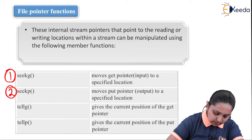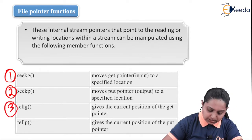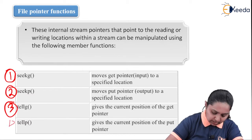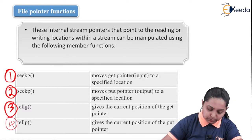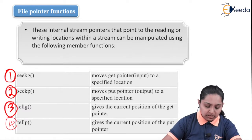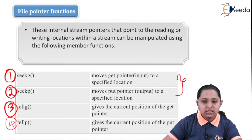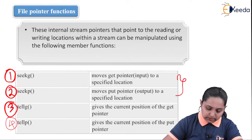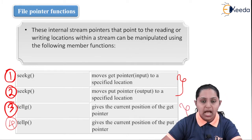The third function is tellg, which gives the current position of the get pointer. And the fourth is tellp, which gives the current position of the put pointer. So seekg and seekp are used to move your cursor to a particular location, and tellg and tellp are used to get the location of the get pointer and put pointer.